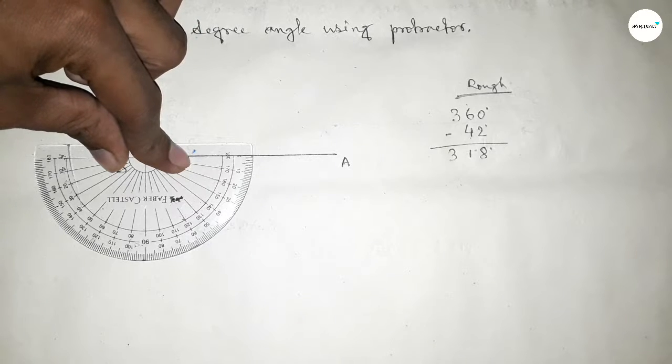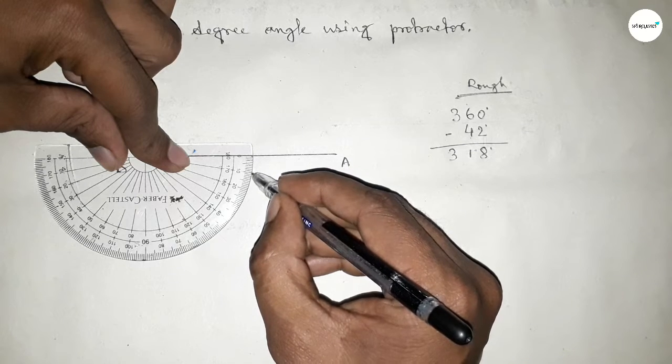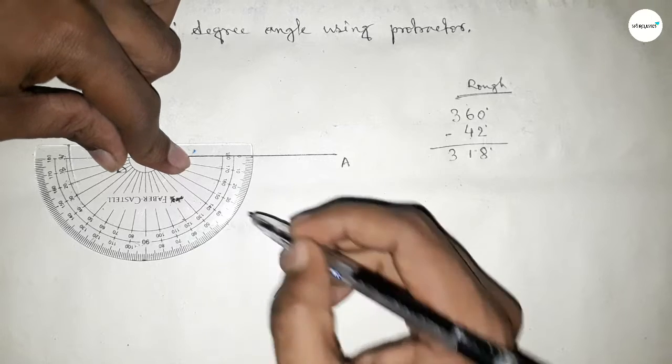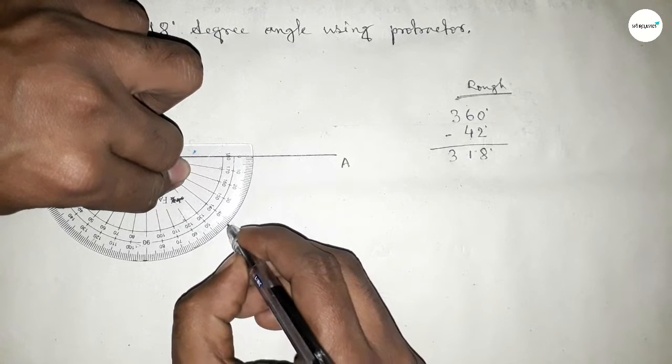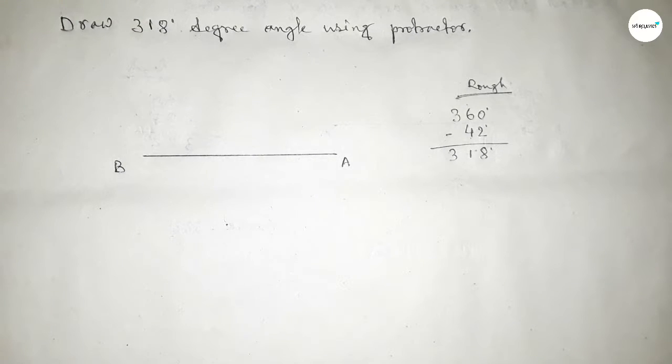Now counting 42 degree angle. So this is 10, 20, 30, 40, 41, 42. So this is 42 degree angle. If we subtract 42 degree angle from 360 degree, then we can get 318 degree angle.